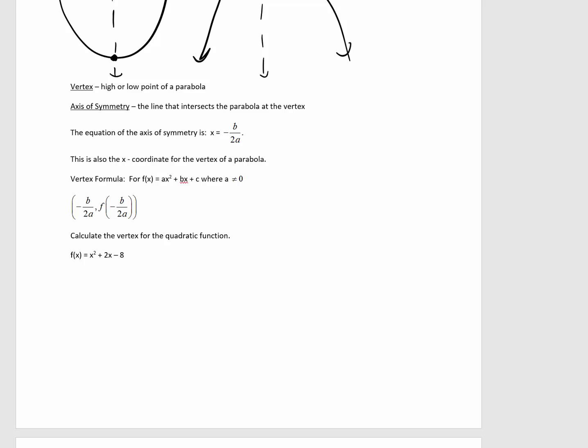So, let's calculate the vertex for this quadratic function. So, the axis of symmetry, that equation is x = -b/2a.